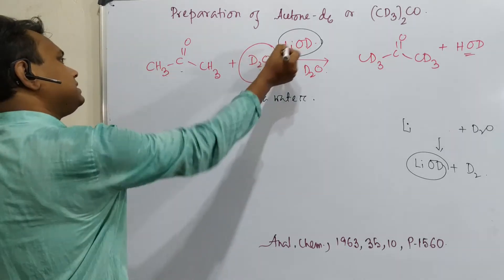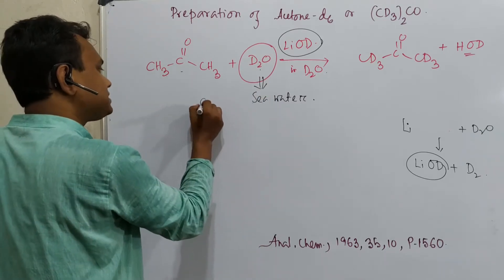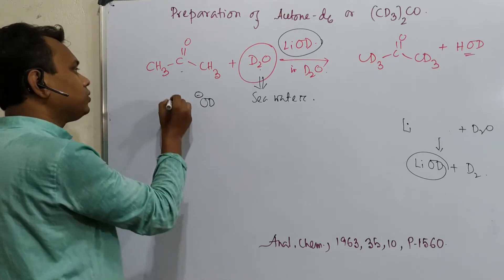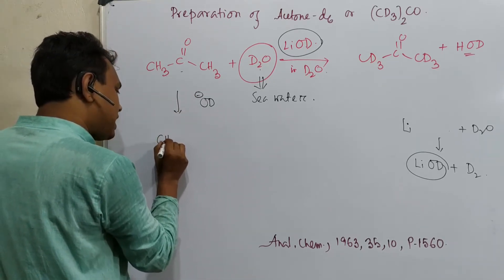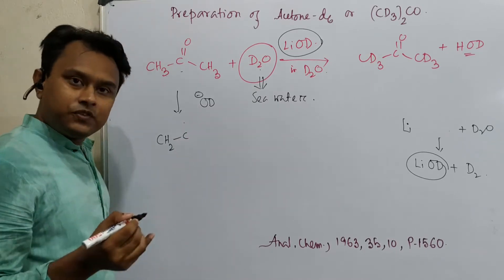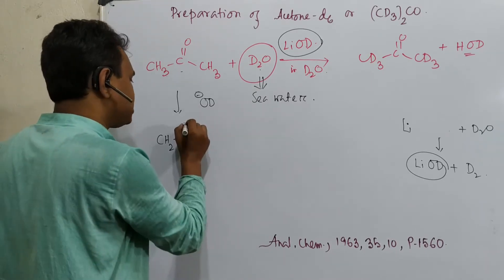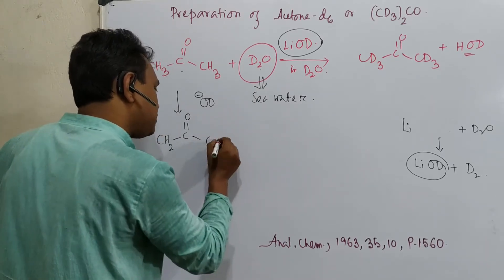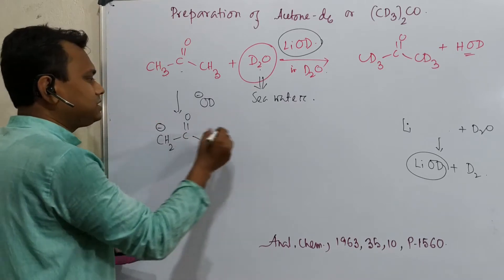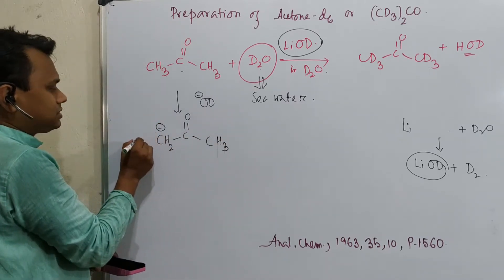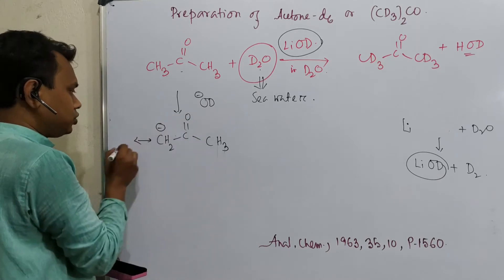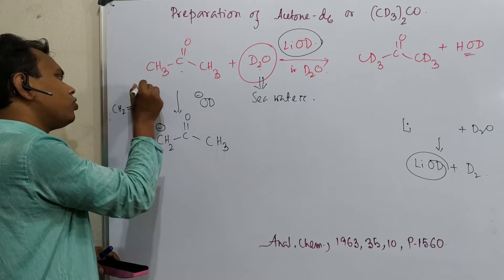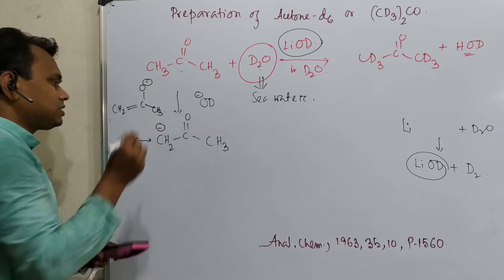Now what happens? In this case, the base is OD minus. We know that ketones in the presence of base undergo enolate formation. If you feel any difficulty understanding, please visit aldol condensation video where the concept is cleared. So what it produces is CH2 minus C=O CH3, and this is actually resonance stabilized. In this way, you may consider CH2=CO minus CH3, this is the resonance stabilization.